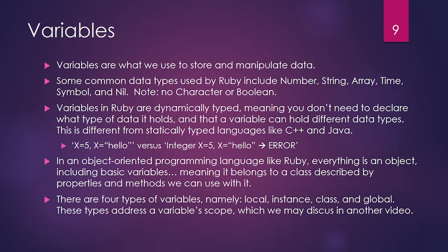Variables in Ruby are dynamically typed, which means you don't need to declare what kind of data it holds ahead of time. Plus the data in a variable can change types over the course of a program. This is very different from statically typed languages like C++ and Java where you need to declare a variable and what kind of data it holds before you can use it, and that type cannot change. With a dynamically typed language like Ruby, there's a lot less code involved and a lot more freedom, but that can also be more rope to hang yourself when it comes to debugging.